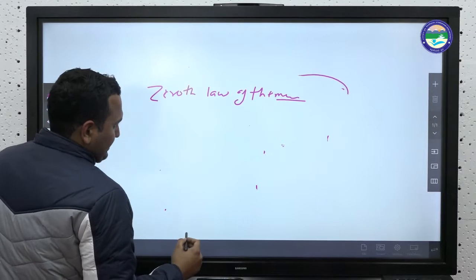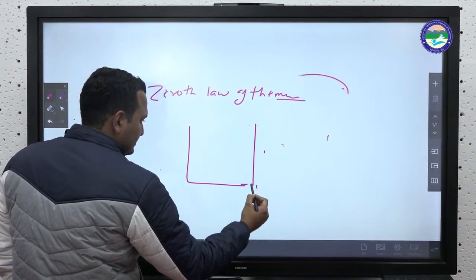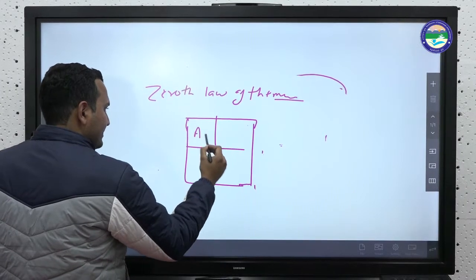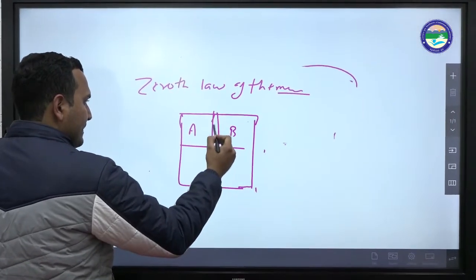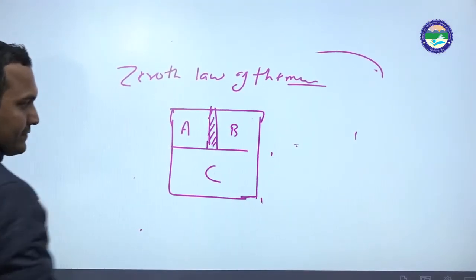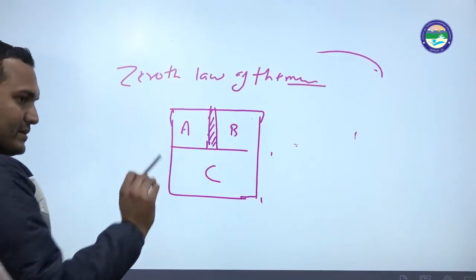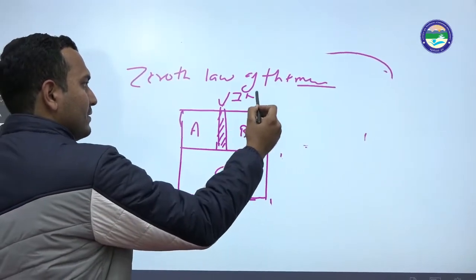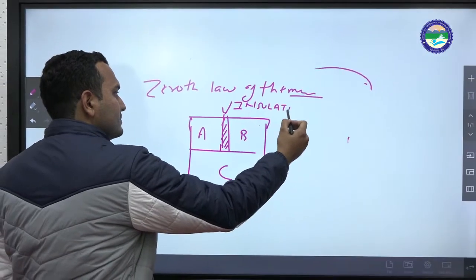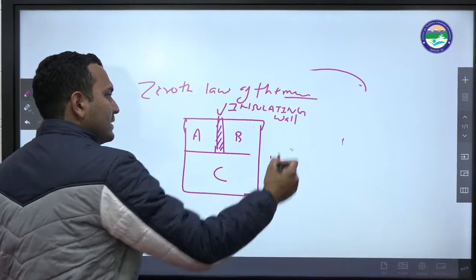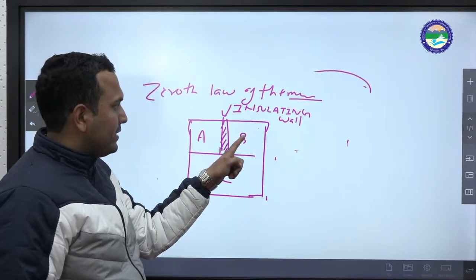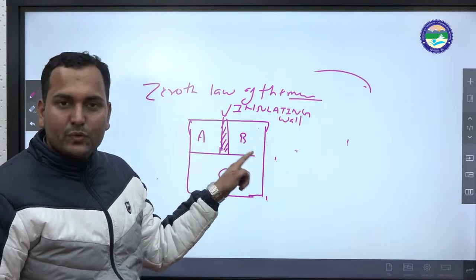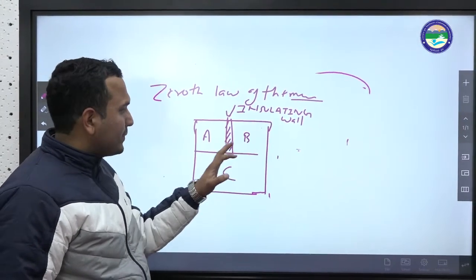What is the zeroth law of thermodynamics? Suppose we have three systems A, B, and C. A and B are separated by an insulating wall. An insulating wall does not allow the flow of heat — heat will not flow from A to B nor from B to A.